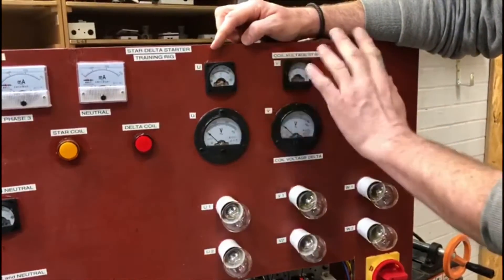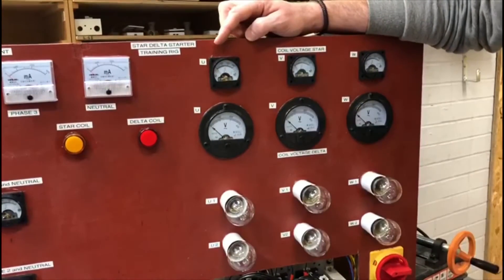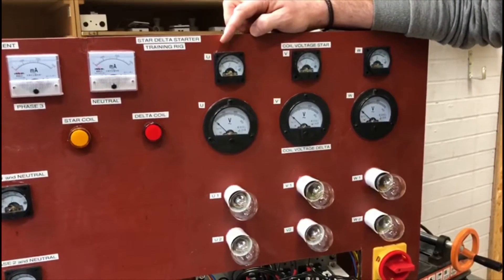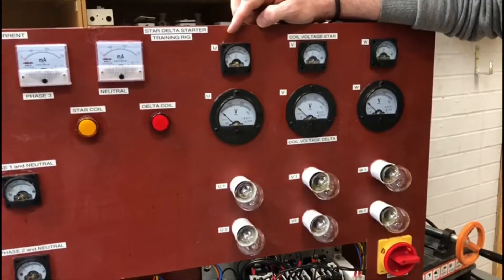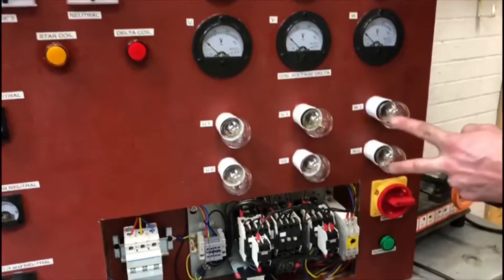These are when it comes up in star, so they should always be reading around 230 volts. These ones, however, are when it changes over to delta, which is when they are in 400 volts.